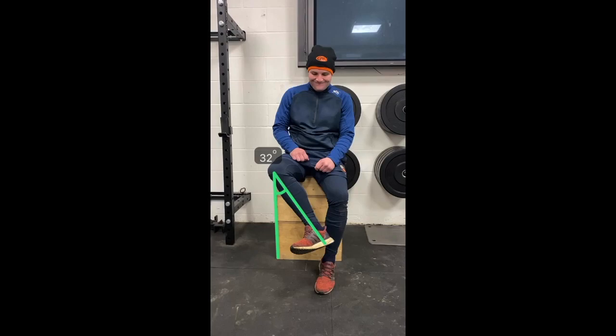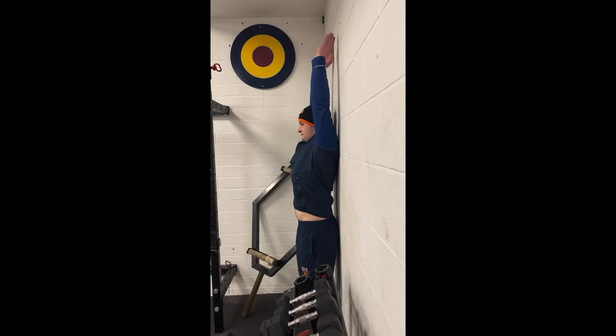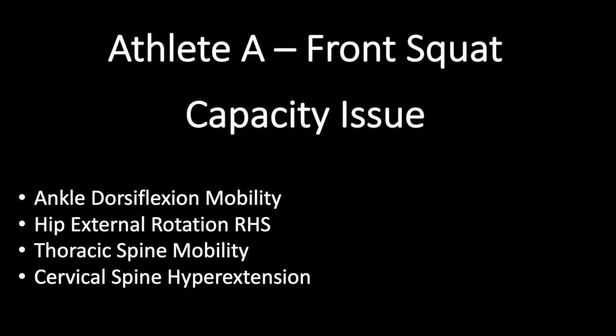When performing the standard shoulder elevation against the wall, we can see the athlete is probably compensating for his lack of thoracic mobility by extending in the lumbar spine, and most likely displaying a rib flare as well. To conclude with athlete A, he has a capacity issue when completing the front squat, and these capacity issues lead him to complete the front squat in a non-optimal manner, causing compensatory movements elsewhere.